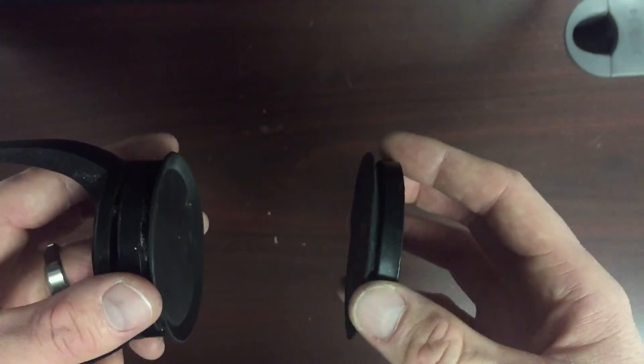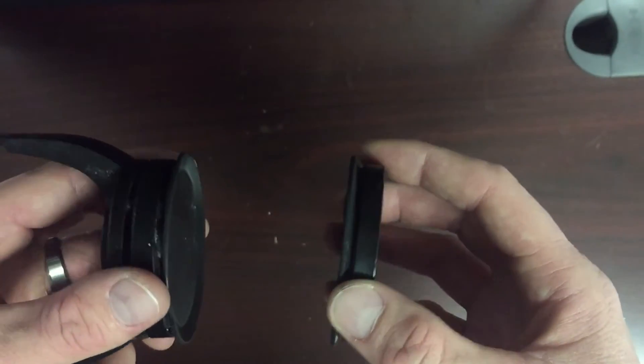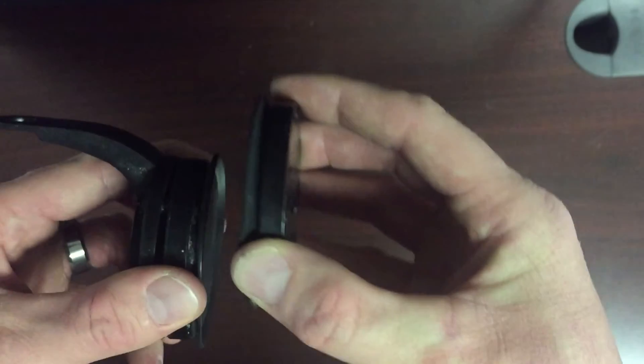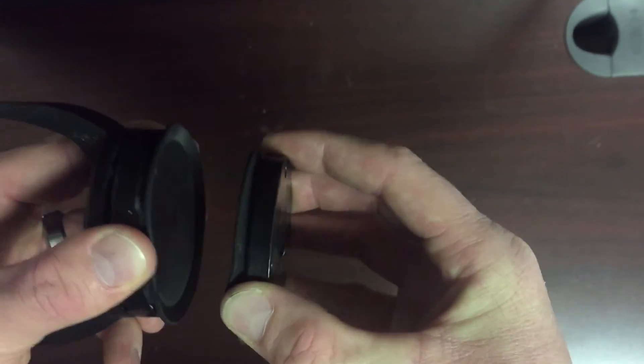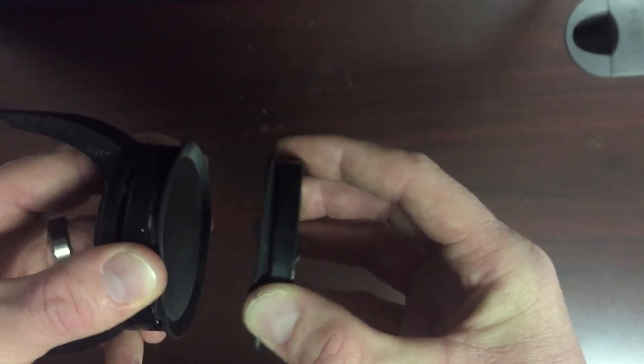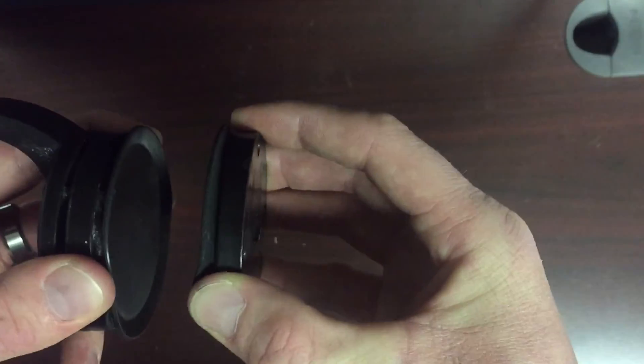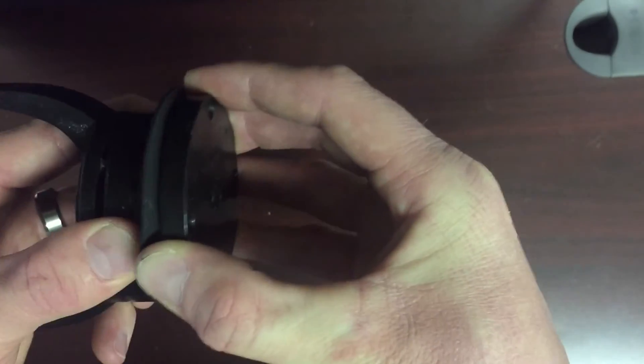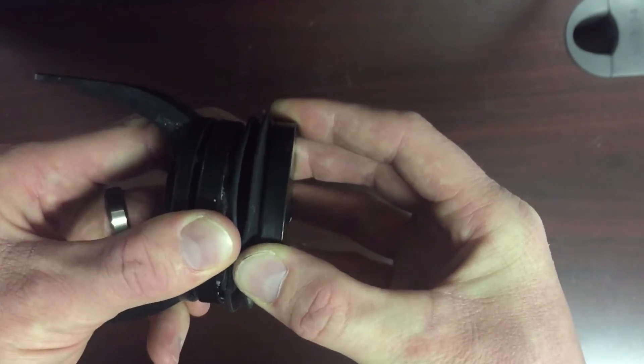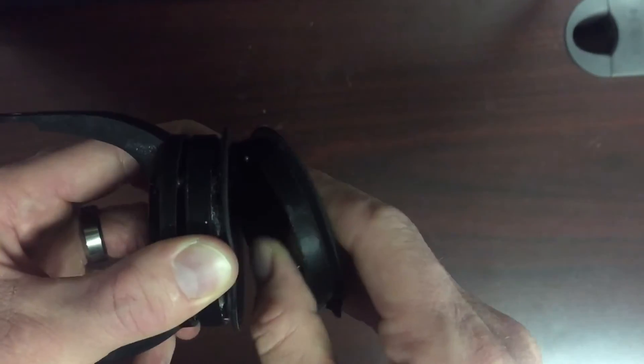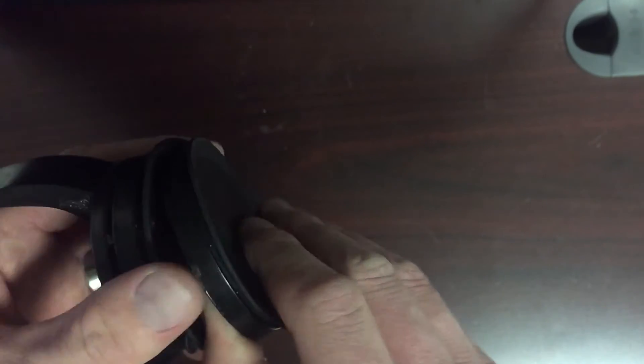What ended up happening was the magnets got switched. I didn't even know this was possible. No matter how hard I try to push these together, the polarity is reversed and they're pulling against each other. I'm exerting as much force as I can, but if you flip the magnet over, of course it sticks.